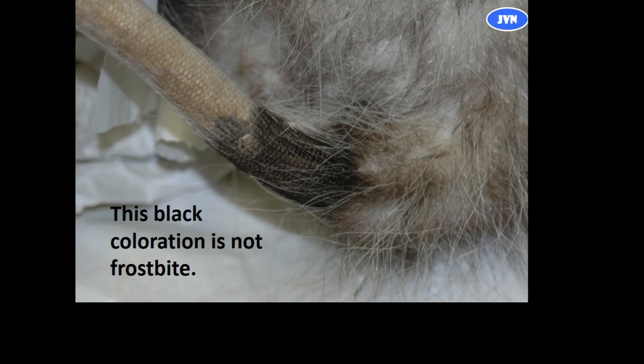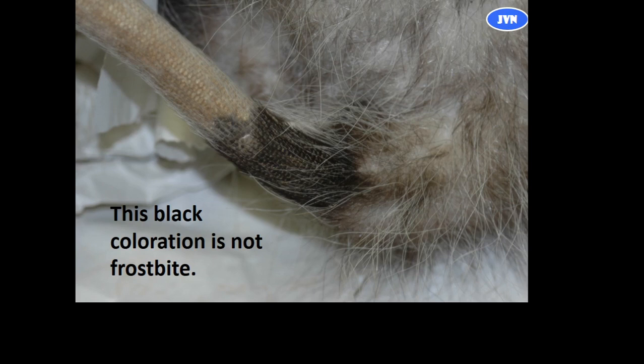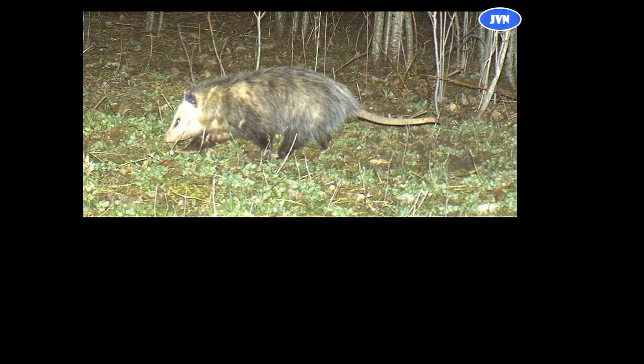Just a pet peeve of mine: for whatever reason the base of a possum's tail is black, and a lot of people think that's frostbite. Frostbite is going to occur at the tip of the tail, where the tail is farthest away from the heat — from the furnace. As we go through this PowerPoint, be looking at the rest of the possum pictures and see if you can see black at the base of the tail on all of them.